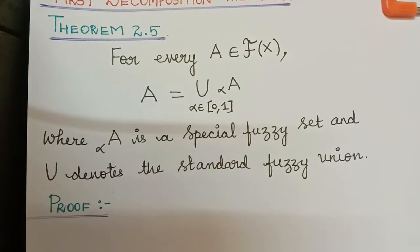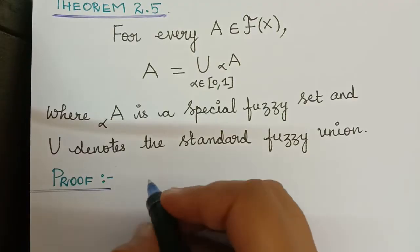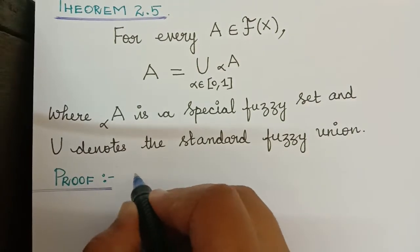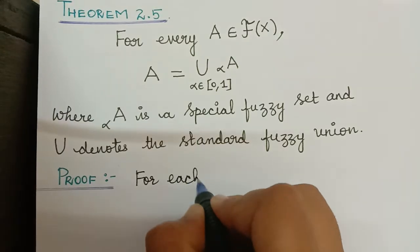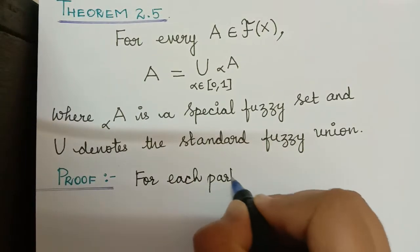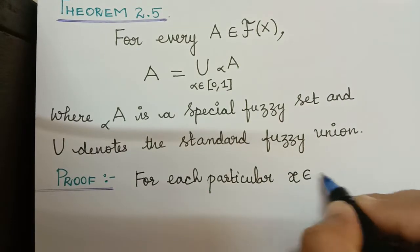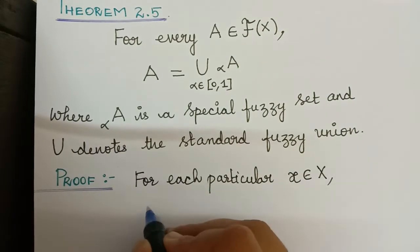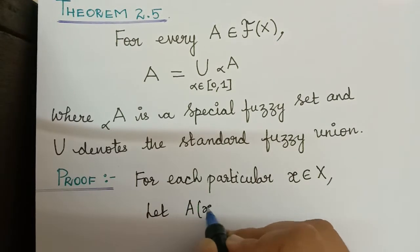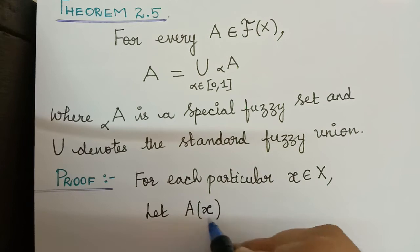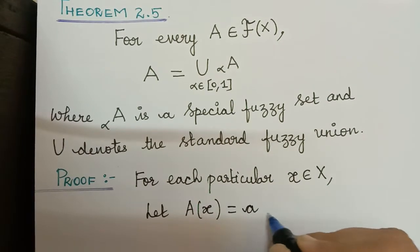We shall now prove this. We shall consider a particular element x, which is an element of capital X, that is the universal set. For each particular element x, an element of capital X, let us assume that the membership grade of element x with respect to the fuzzy set A is equal to a.